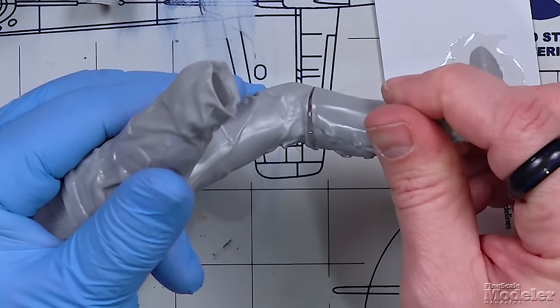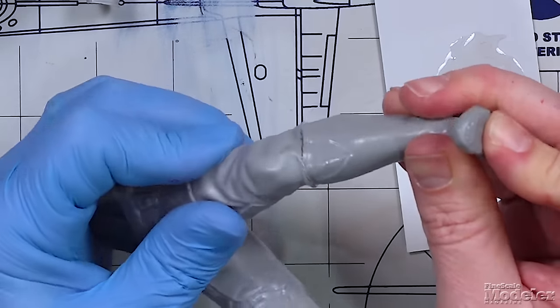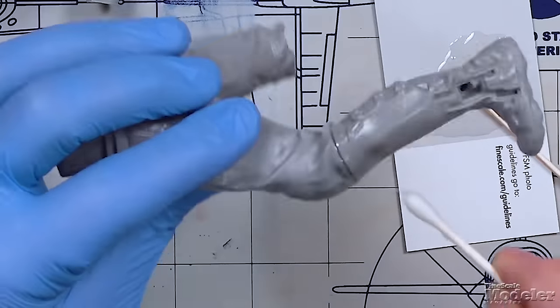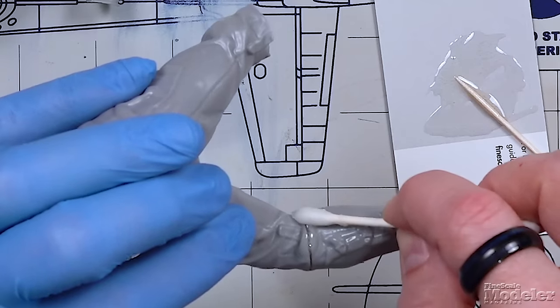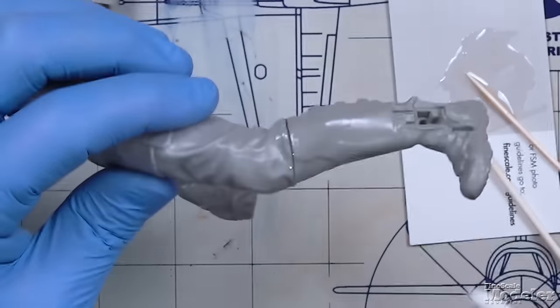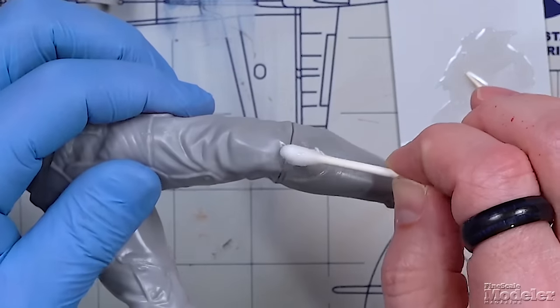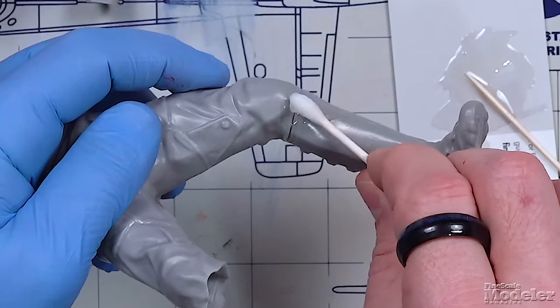Uh oh, we've got some ooze there. But never fear, we can come in with the isopropyl alcohol on a cotton swab and we can start cleaning that up. Now remember, it has to be uncured. The alcohol is not going to work on cured epoxy, two-part epoxy.